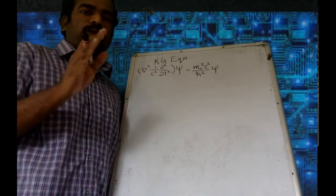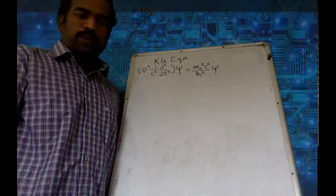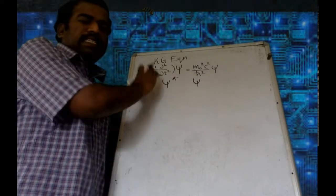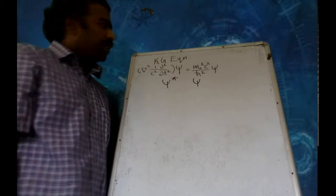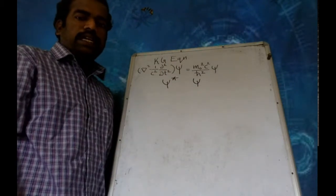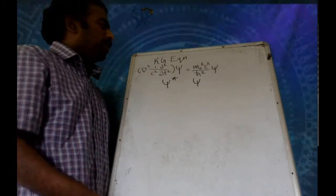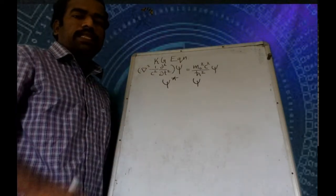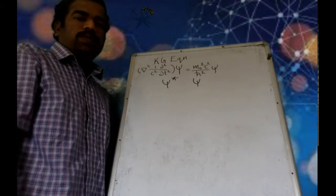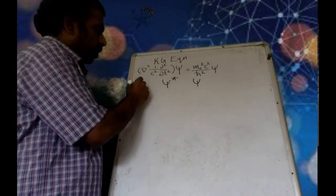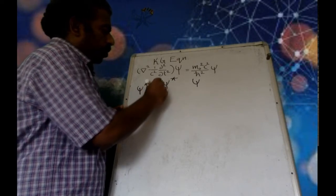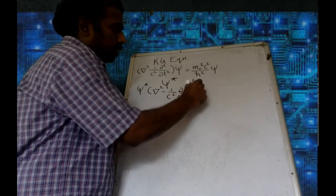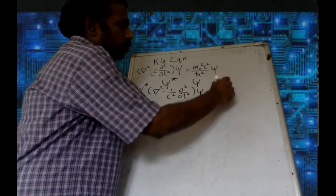The procedure is: multiply psi-star from the left of the equation. Then take the complex conjugate of this equation and multiply psi from the right. So step one: left equation multiply psi-star from the left. Another step: you are multiplying psi-star from the left.